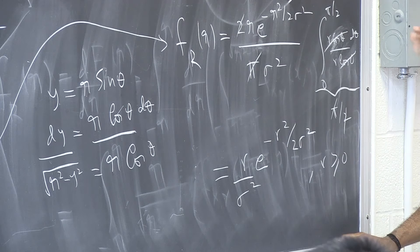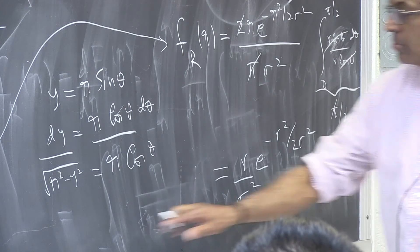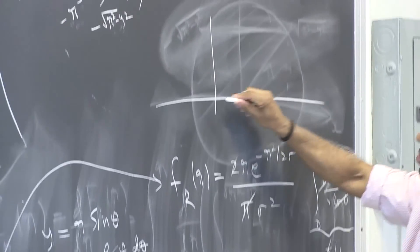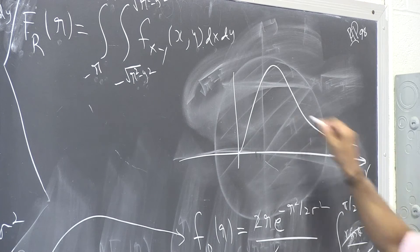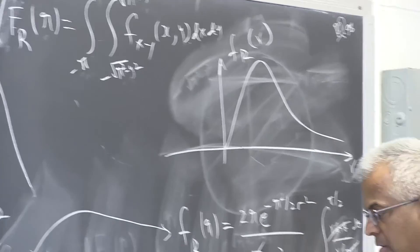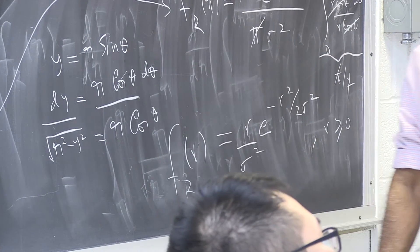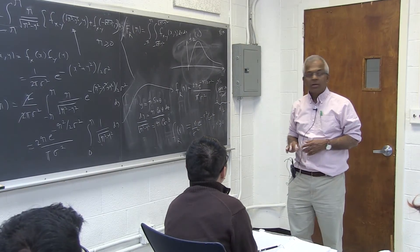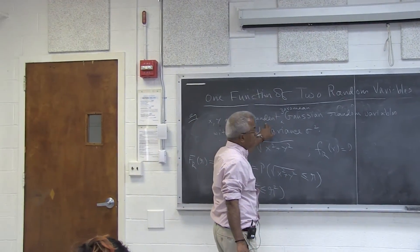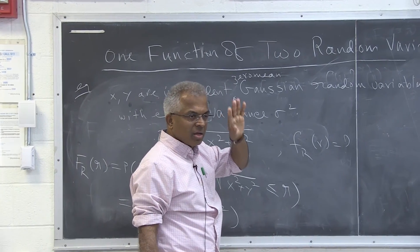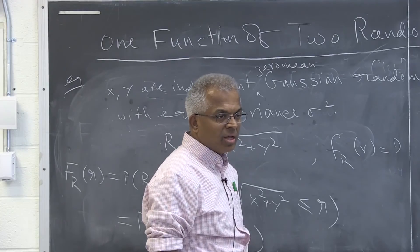This density function is the famous Rayleigh distribution. It starts at 0 when r=0, increases, then tails off. This result requires four conditions: x and y must be independent, zero mean, Gaussian, and have equal variance. If all four conditions hold, then the amplitude r = √(x²+y²) follows a Rayleigh distribution.